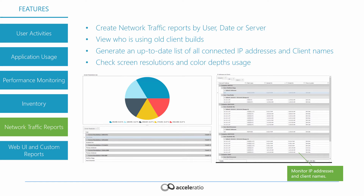You can check network traffic reports for all users on your remote desktop services or Citrix farm. You can pinpoint exactly when clients connected to the environment, and whether they connected from an internal or external location via the IP address. You can even check screen resolutions in use, client versions, and color depths of the clients.